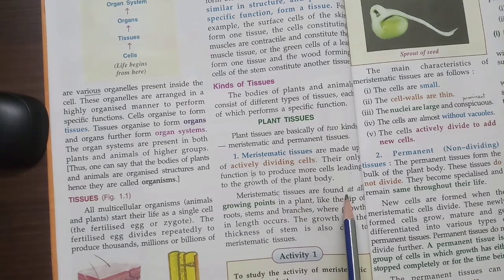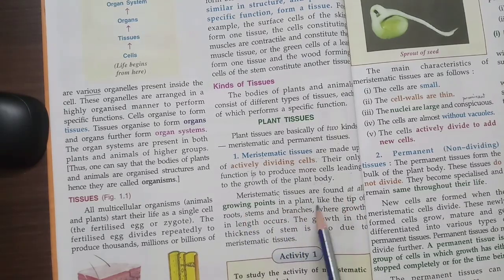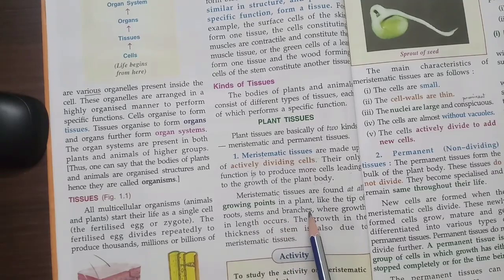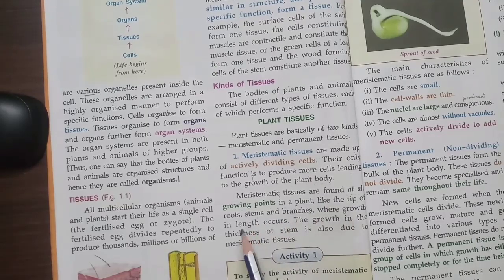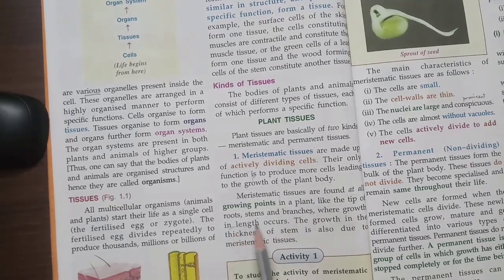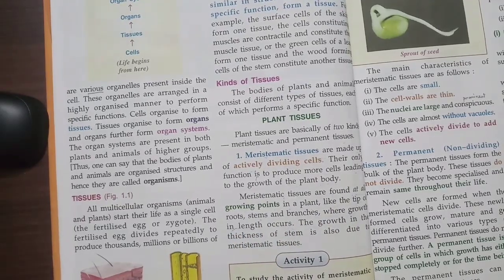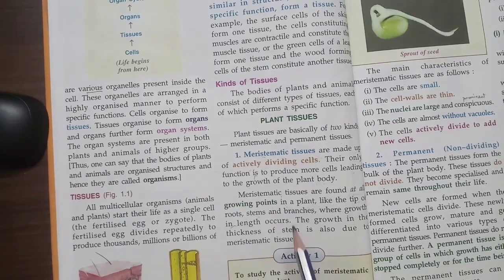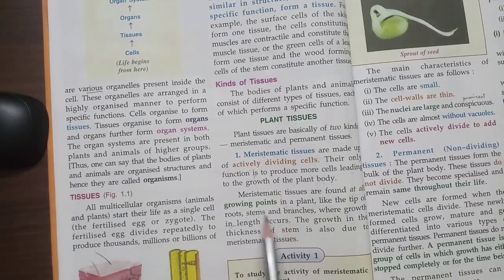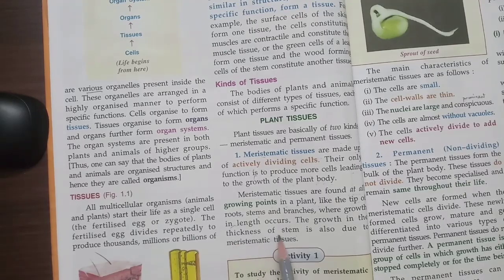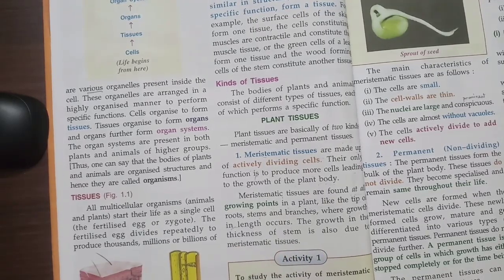Meristematic tissues are found at all growing points in the plant, like the tip of roots, stem and branches, where growth in length occurs. The growth in the thickness of the stem is also due to meristematic tissue.